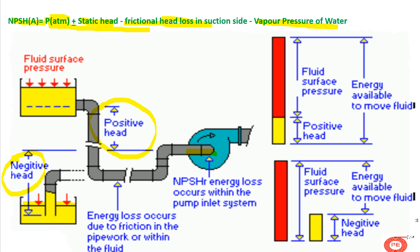The next term shown in the sketch is P_atmosphere — the fluid surface pressure. Atmospheric pressure is always exerted on the fluid in any tank. For frictional loss, you can see in the sketch there are a large number of fittings and piping — each fitting, elbow, and gate valve on the suction side will have a frictional head loss. We subtract this frictional head loss from the total of atmospheric pressure plus or minus the static head.